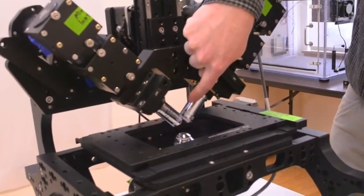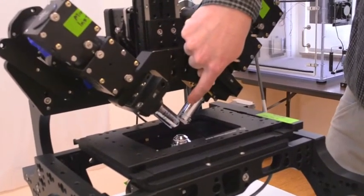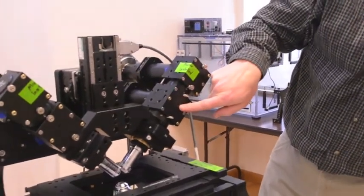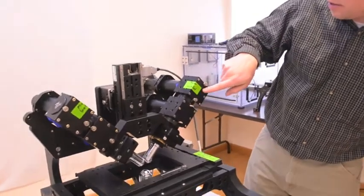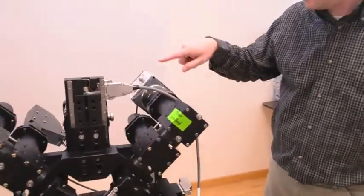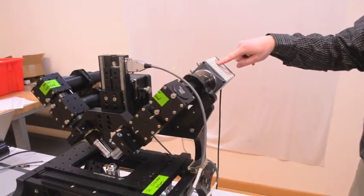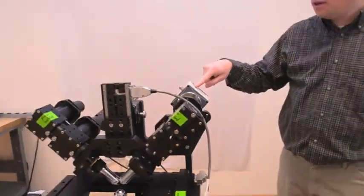So the light sheet is generated by this objective, and then the objective on the right is focused on the illumination plane. And whatever fluorescent light is emitted is collected by this objective, passes through the dichroic mirror in this cube, and in this cube is reflected back to the camera on the right side. So that's one of the two imaging paths.